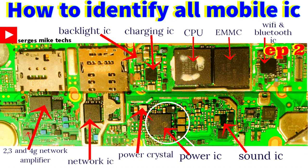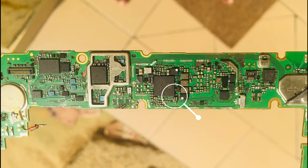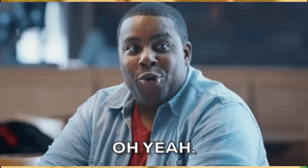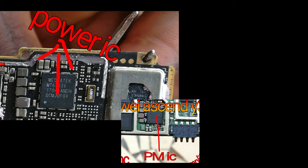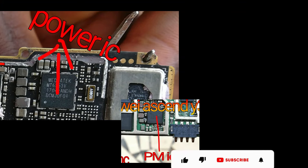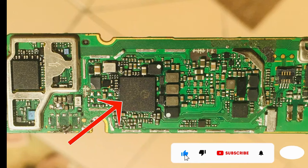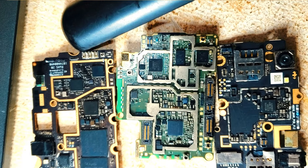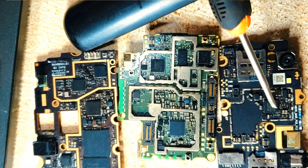Power IC or PMU. The problem resulting from the power IC can be very tormenting and can even give you high blood pressure, especially when dealing with an expensive phone. The power IC is an important microchip found in the power section of all mobile phones. The power integrated circuit distributes the required value or measure of current and voltage to all other parts of the mobile phone. The power management unit is responsible for power discharge to some parts of your phone.